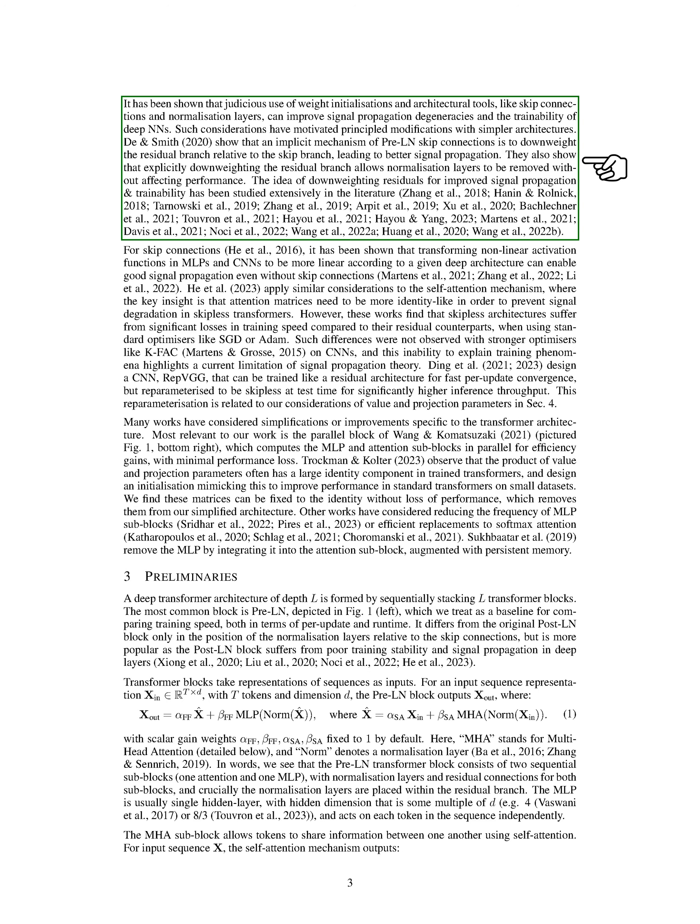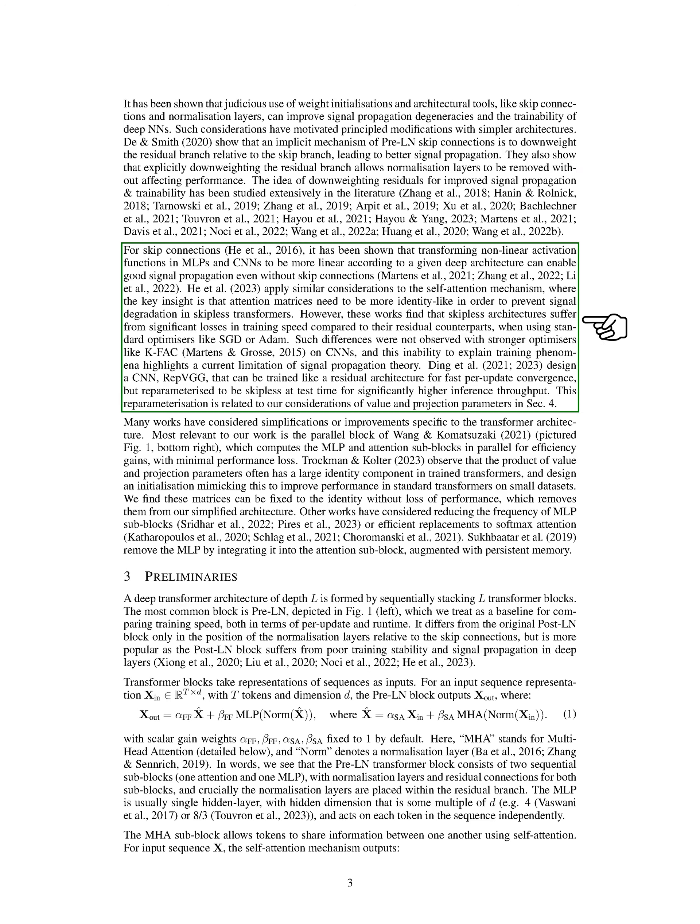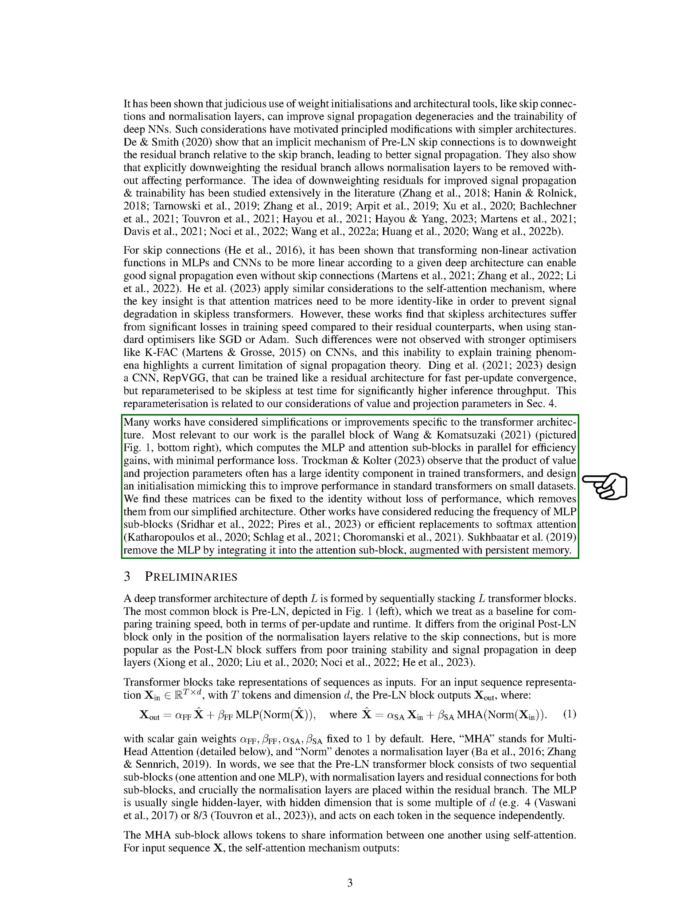Such considerations have motivated principled modifications with simpler architectures. For skip connections, it has been shown that transforming nonlinear activation functions in MLPs and CNNs to be more linear according to a given deep architecture can enable good signal propagation even without skip connections. Many works have considered simplifications or improvements specific to the transformer architecture. Most relevant to our work is the parallel block, which computes the MLP and attention sub-blocks in parallel for efficiency gains, with minimal performance loss.